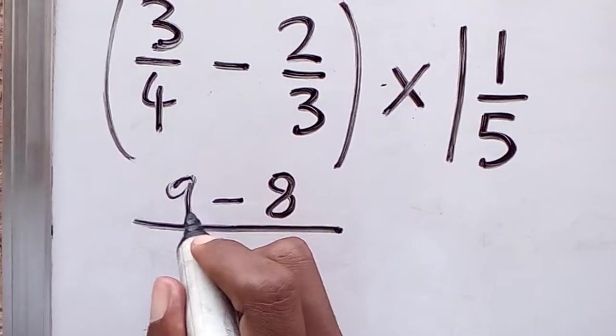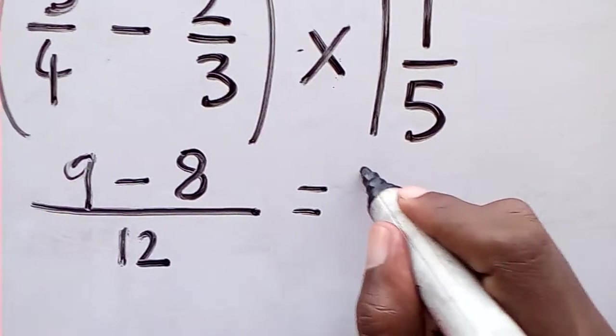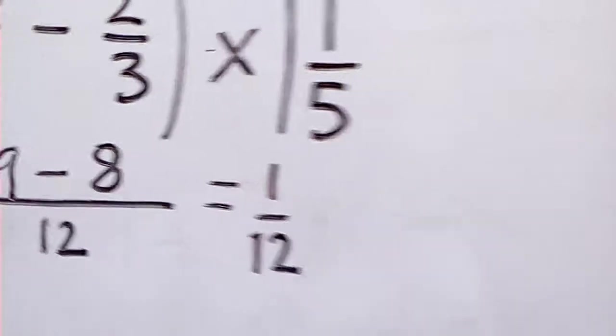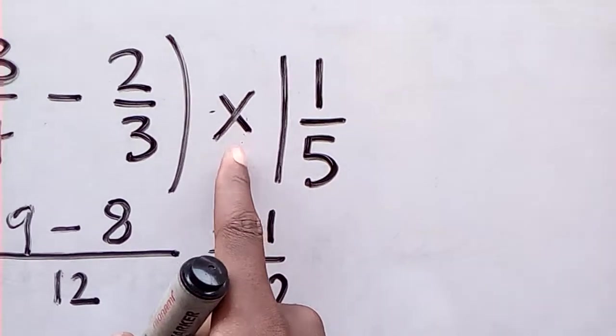We're going to have here 9 minus 8, which is 1 over 12. Next, I'm going to handle the multiplication.